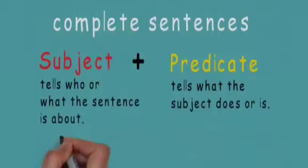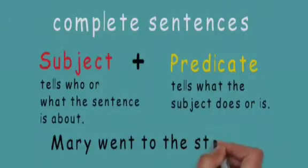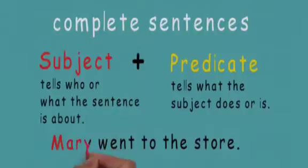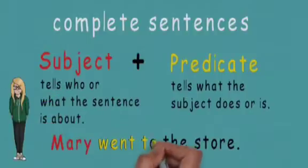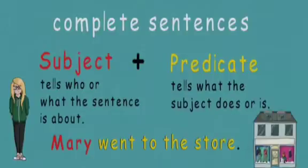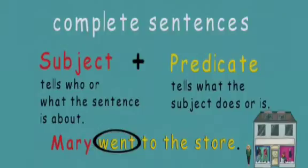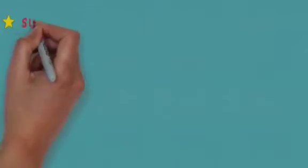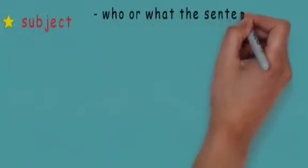For example, in the sentence 'Mary went to the store,' Mary is who the sentence is all about. Went to the store is the predicate because it tells what Mary the subject did. It's important to know that the predicate usually begins with the verb and includes the rest of the sentence.